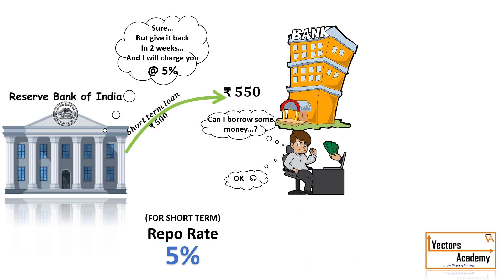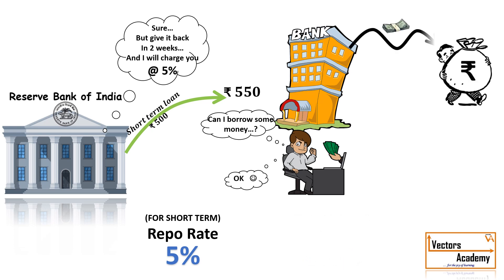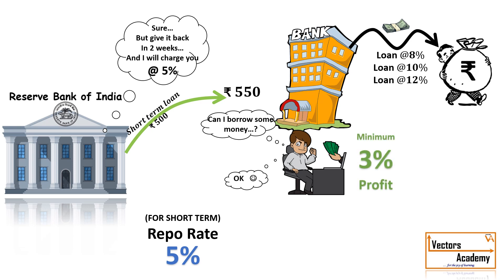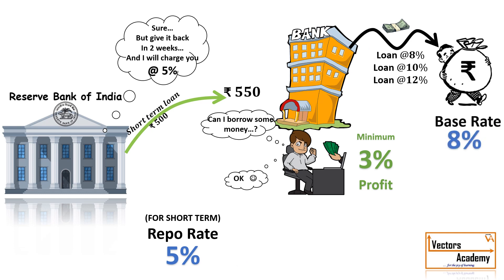Once the bank has the money, it can give away that money to its customers as loans. The bank has to earn profit, so it charges a higher rate of interest on the loan than the repo rate. If the RBI decides to increase the repo rate, the rate of loan also increases, whereas if the RBI decreases the repo rate, the rate of interest on the loan also decreases. Hence, by controlling the repo rate, RBI can control the amount of money in the economy. The minimum rate of interest charged by the bank to the end consumer is called the base rate, which is decided by the bank itself and not the RBI.